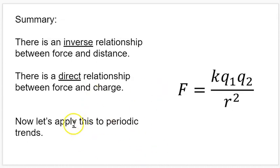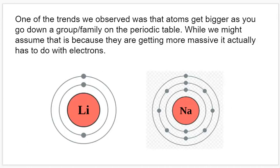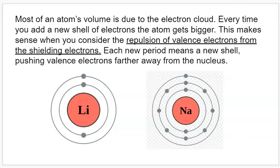So now let's see how this applies to our periodic trends. One of the main trends we focused on was the sizes of the atoms on the periodic table. We saw that there were different trends for going up and down a column versus across a period. As we go down a column, the size gets bigger. While that might seem obvious because they're getting more protons and more massive, it actually has more to do with the electrons. Most of the atom's volume is due to the electron cloud.